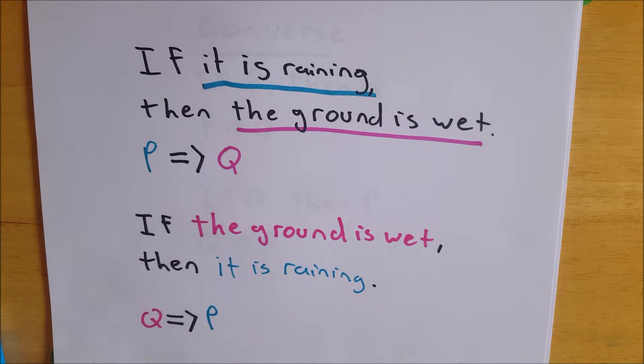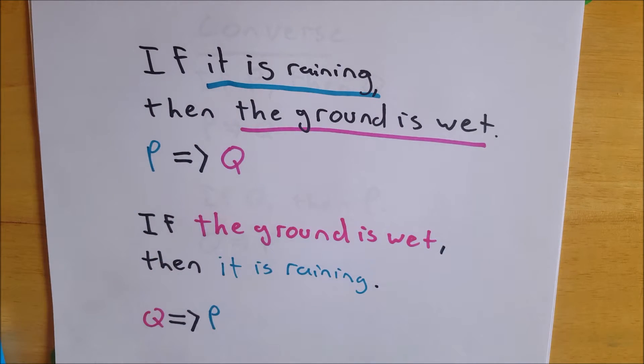That's the converse of if it is raining, then the ground is wet with some color coding that I think you found helpful. I hope you found helpful. I think it helps. I was going to do another example with some mathy stuff, but I think this just about clears it up.